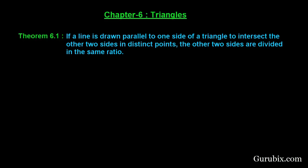Welcome friends. Let us prove theorem 6.1 of chapter 6. The statement of the theorem is: if a line is drawn parallel to one side of a triangle to intersect the other two sides in distinct points, the other two sides are divided in the same ratio. We have to prove the other two sides are divided in the same ratio.